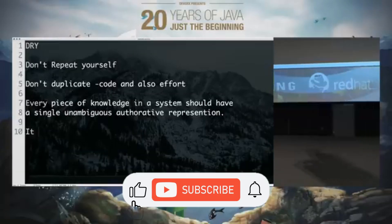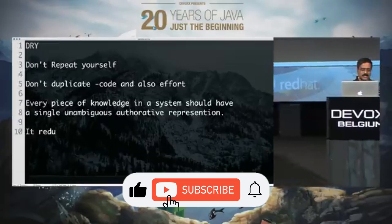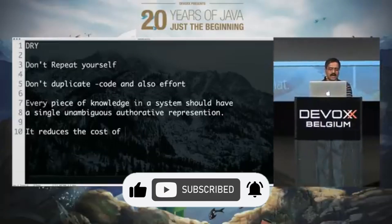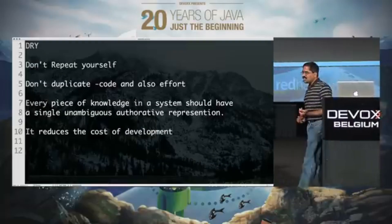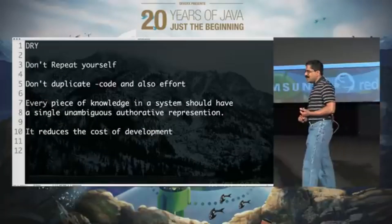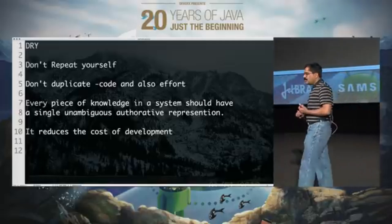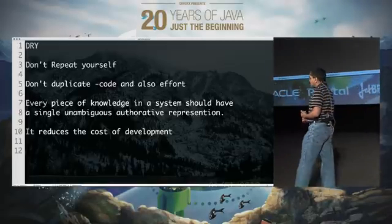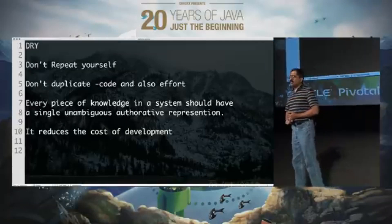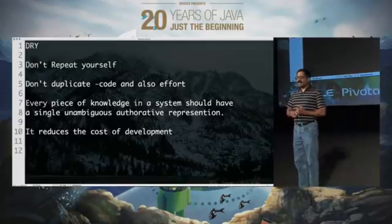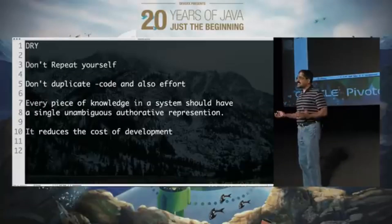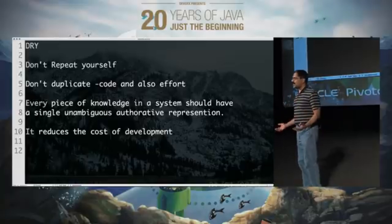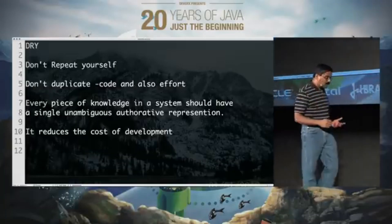So what does the DRY principle do? It reduces the cost of development. How many times do we see configurations being duplicated? It's a nightmare. You've probably seen places where people spend an enormous amount of time doing the same configurations in multiple places. That is a sign of too much duplication — we need to find a way to write scripts and eliminate that kind of duplication. That's very important.